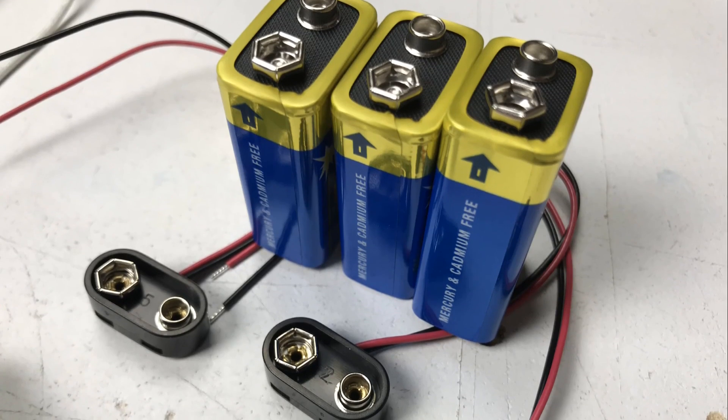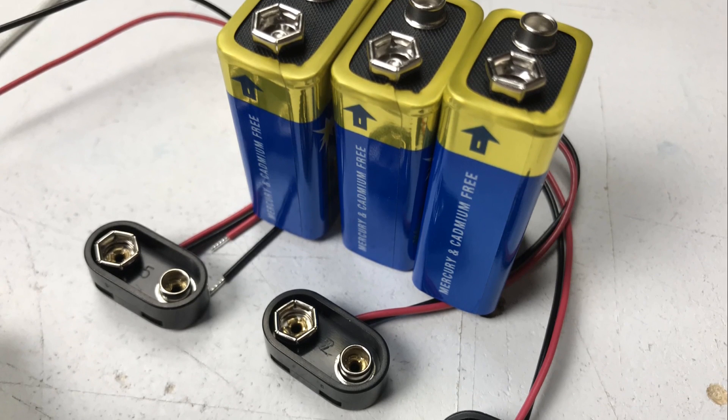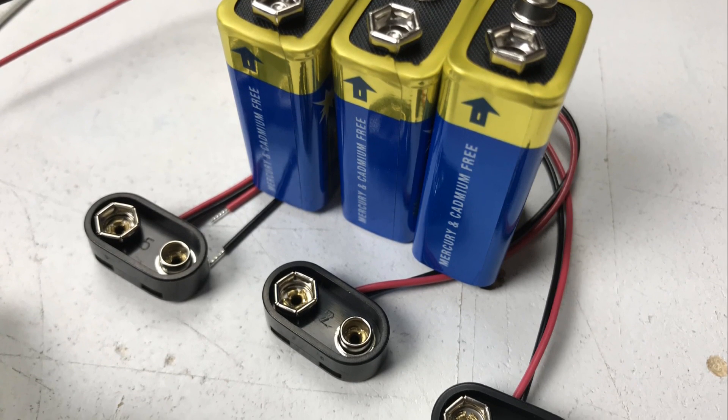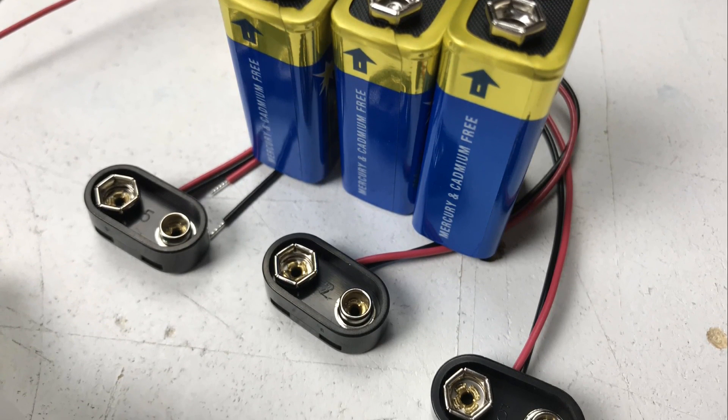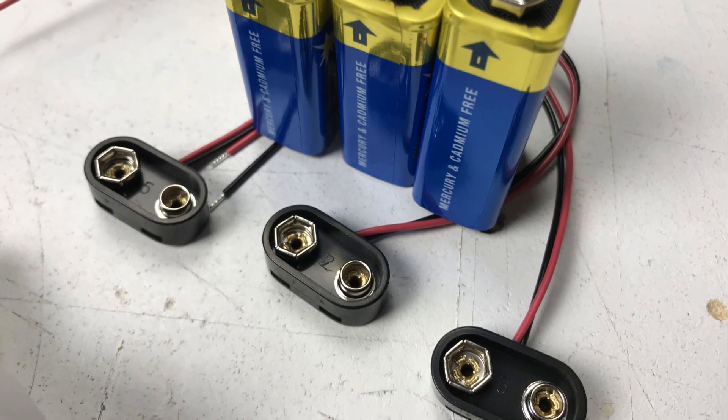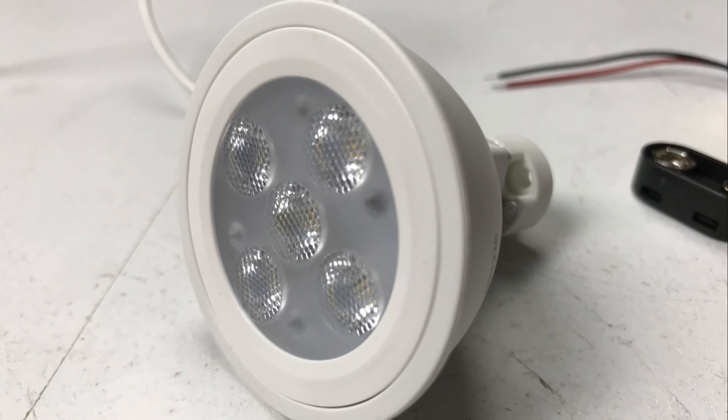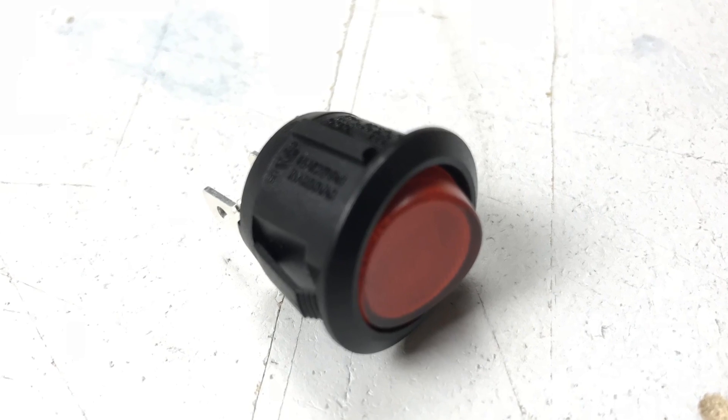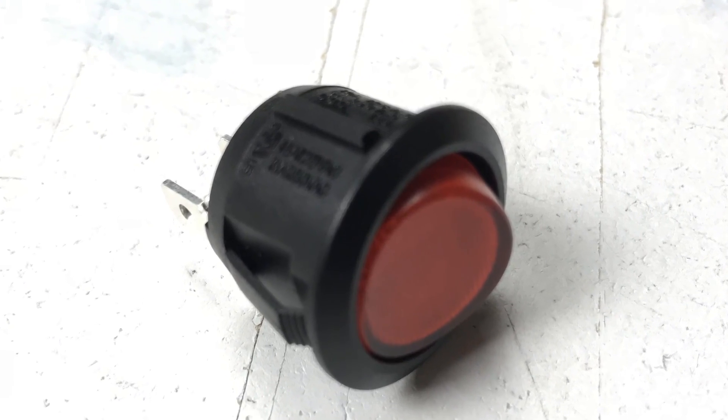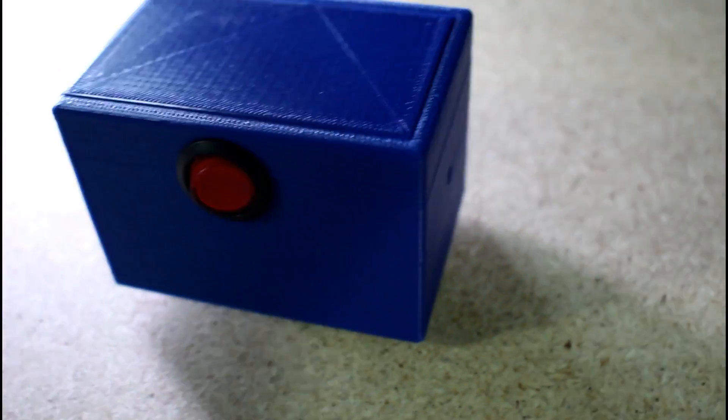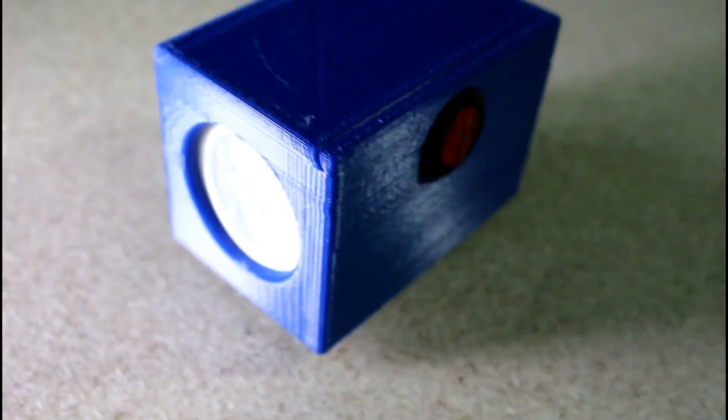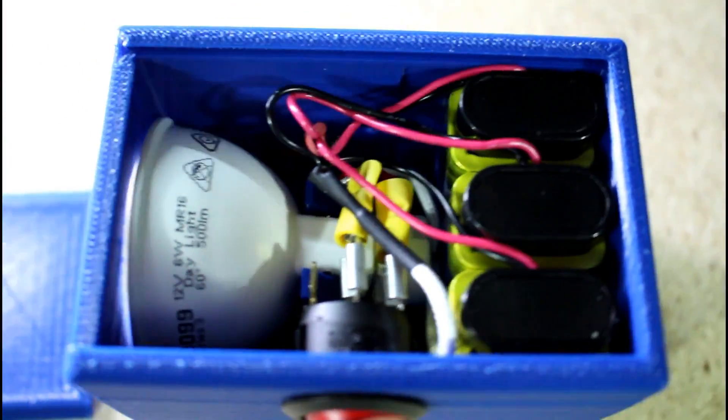So all you need for this project is three 9 volt batteries, three 9 volt battery snaps - the firm type not the soft type seem to be a little bit better. The MR16 globes linked to the globes in the video description. Any switch will actually do. I just happen to use this round one because I had one. And some sort of housing whether it's made out of plastic, whether it's made out of cardboard, or whether it's 3D printed like I've done with mine. Again, linked to the STL file in the video description and over on my website.